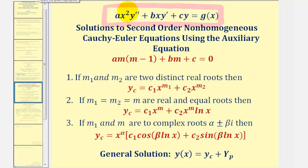For example, looking at this first term, ax squared has degree two, and the term also has y double prime, or the second derivative. Notice how the next term has a coefficient of bx, so the degree is one, and the term also contains the first derivative. And then finally the third term, we have a constant times the function y.